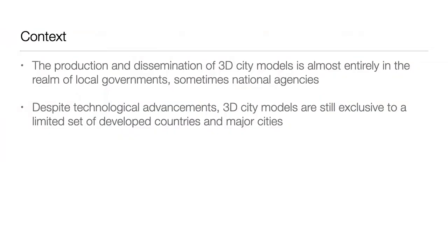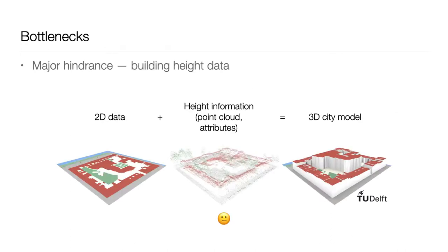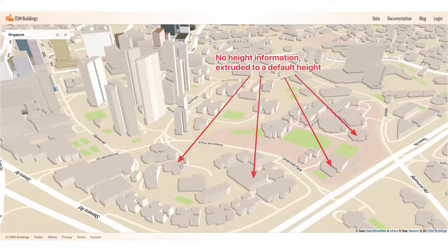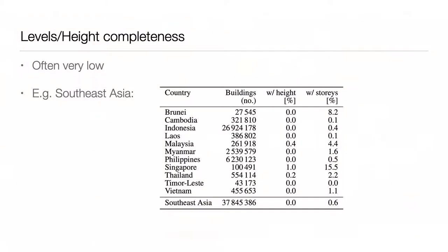So where is the gap and why are we doing this research? OpenStreetMap is great, but most 3D datasets in the world remain procured by local governments. Often they are not released as open data, and they are almost exclusive to developed countries and major cities — virtually all 3D open datasets are from Europe and North America. The main reason for this limited availability is that they can be expensive or complicated to create because collecting heights of buildings is cumbersome.